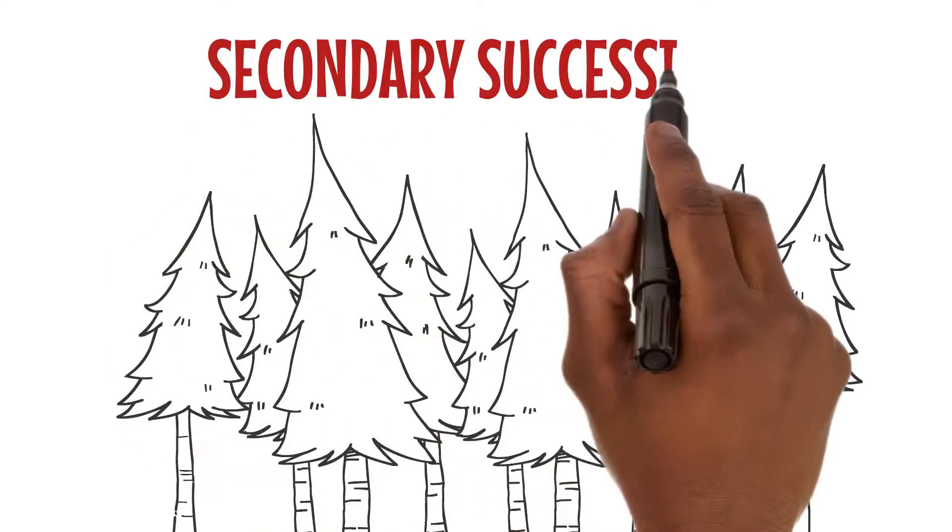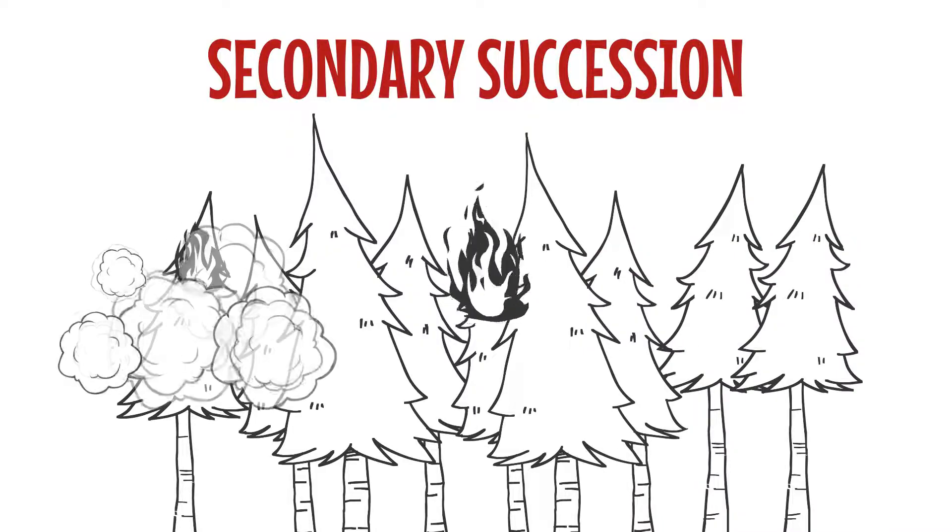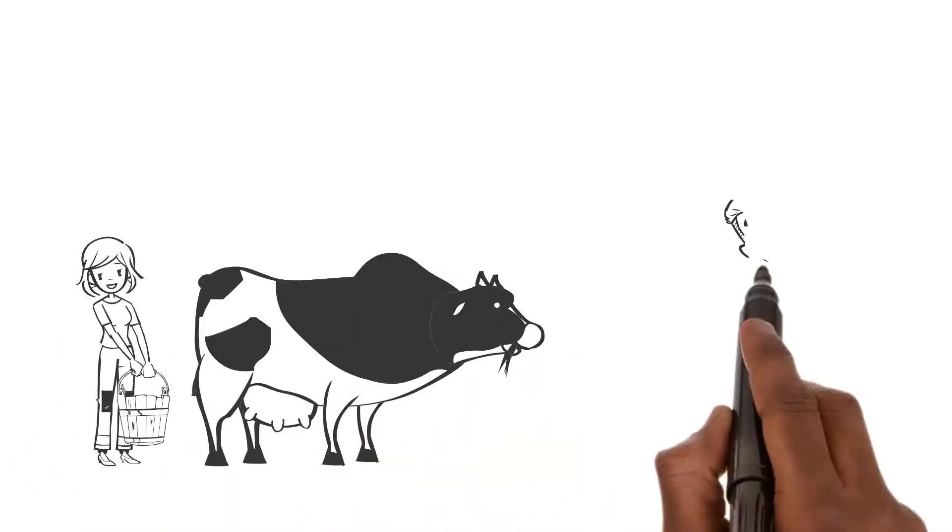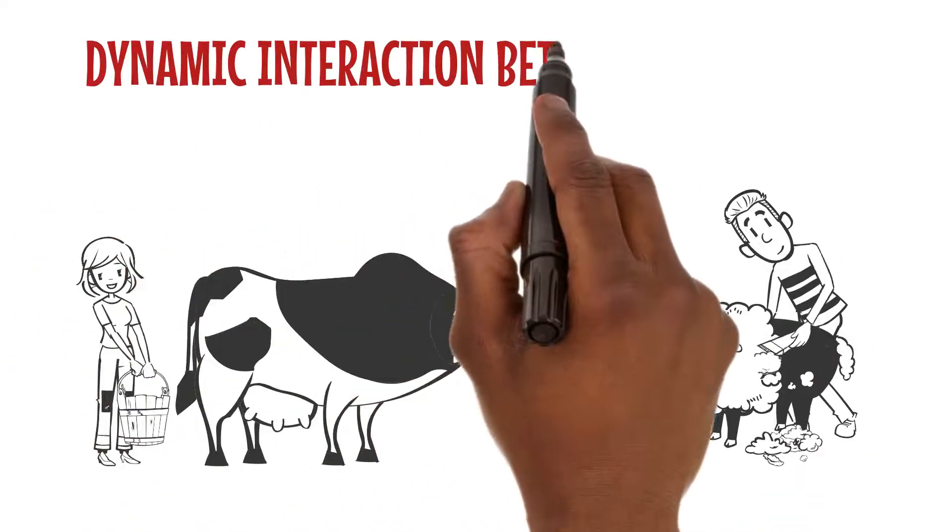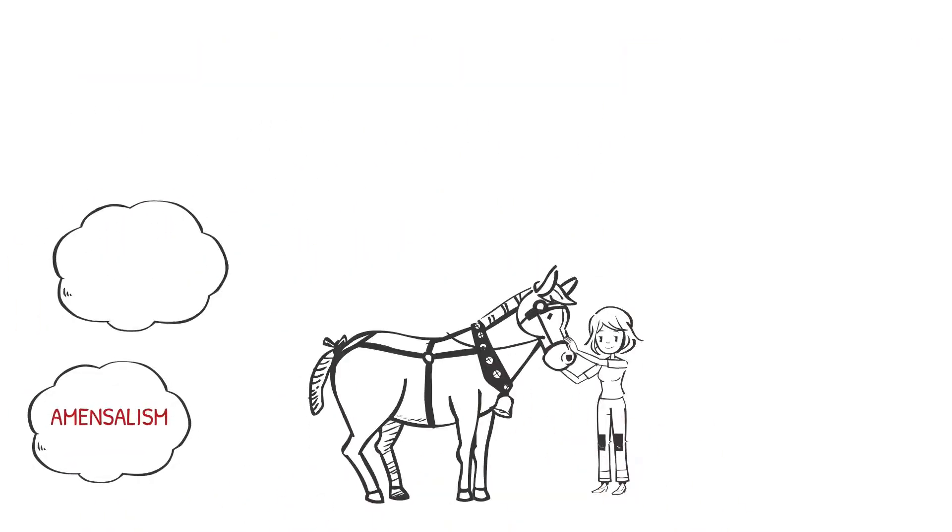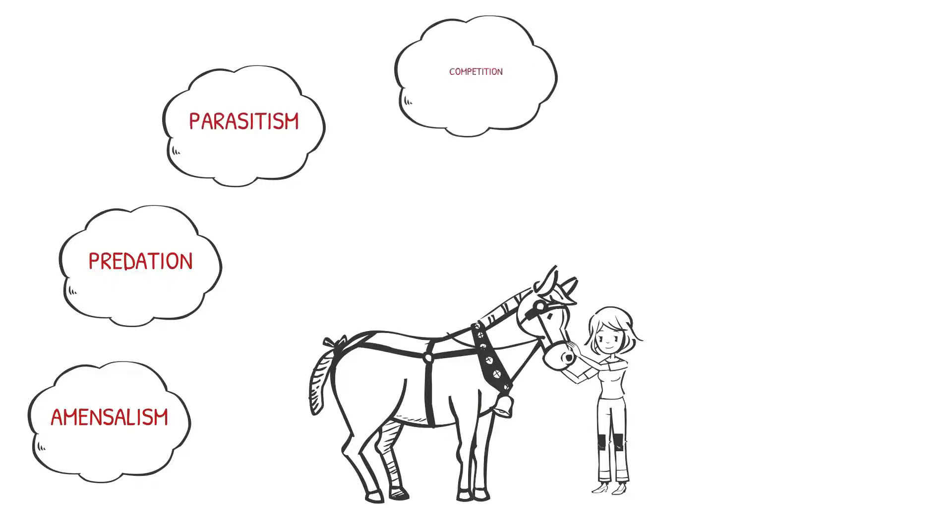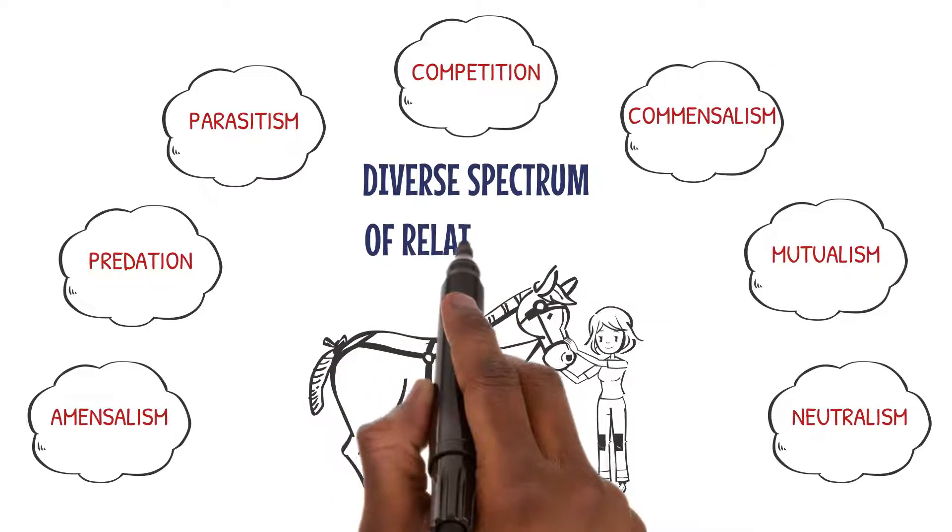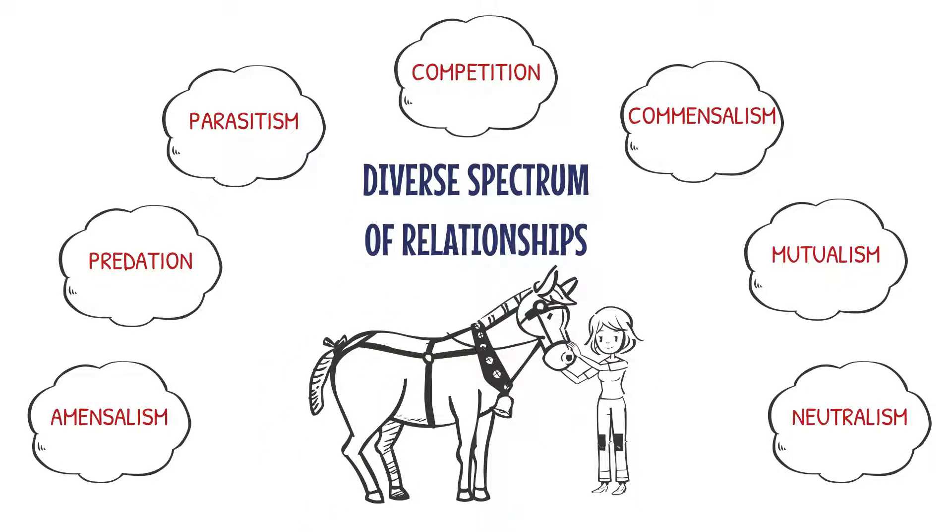The dynamic interactions between organisms play a crucial role. We have amensalism, predation, parasitism, competition, commensalism, mutualism, and neutralism—a diverse spectrum of relationships in the natural world.